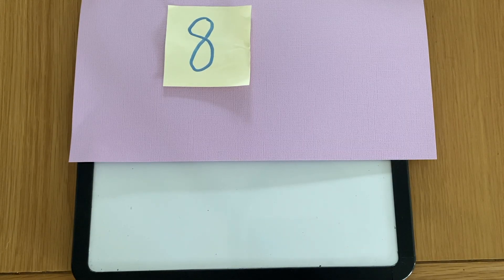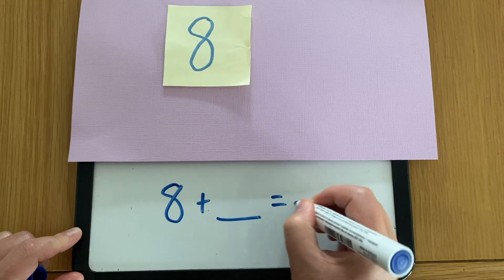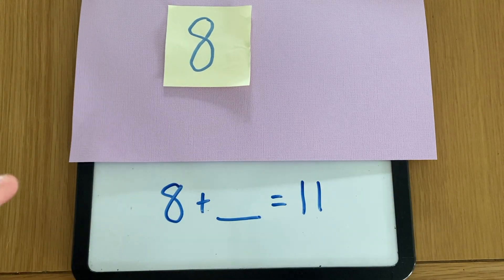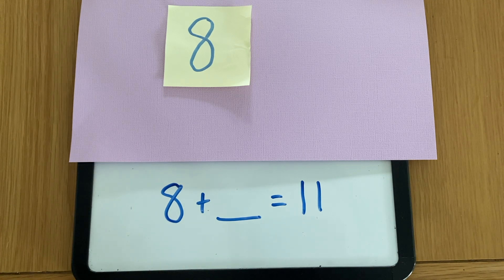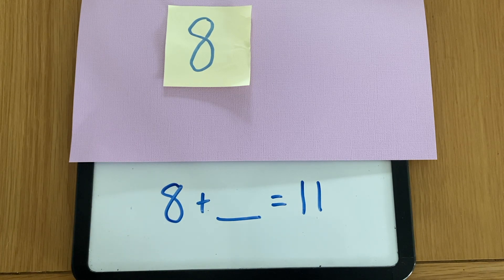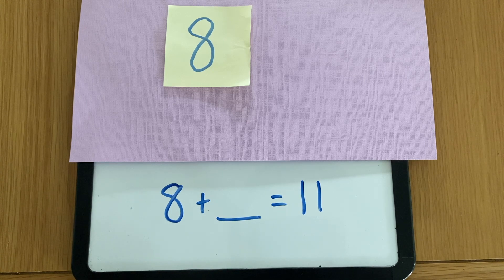And we would always use the number sentences to record our thinking so that students develop an understanding of how to write that as a symbol, how to communicate it with our words, and how that would look as a visual. So bringing together the three critical elements of mathematical understanding.